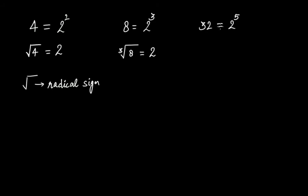If 32 is equal to 2 raised to the power of 5, then the fifth root of 32 is equal to 2.